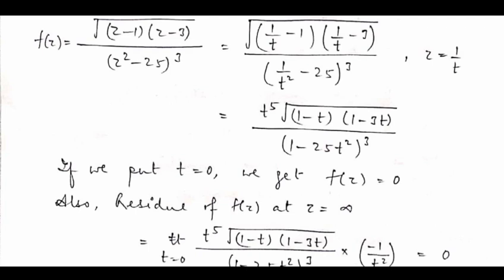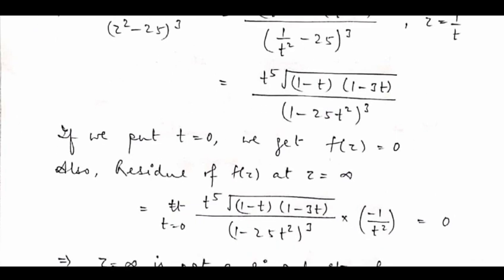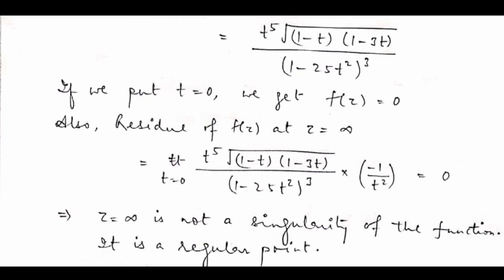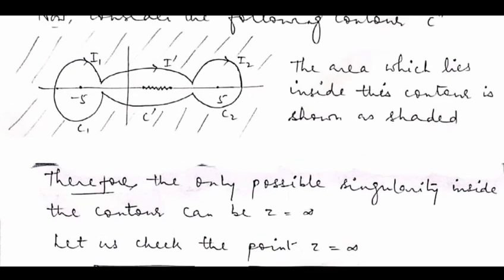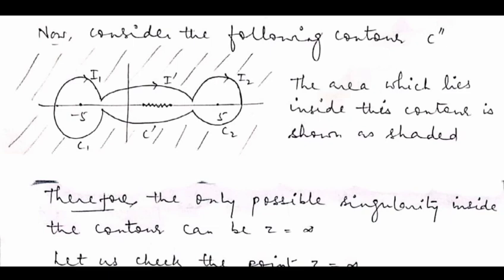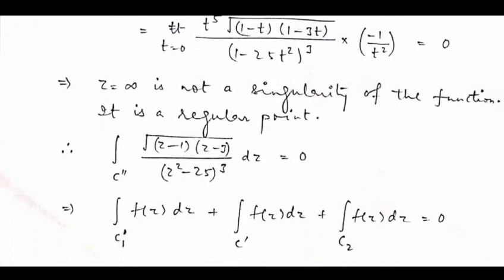Therefore the residue of f(z) at z equals infinity comes out to be 0, so it is a regular point. This means that for the contour C double dash, there are no poles inside, and Cauchy's integral theorem tells us the contour integral over C double dash equals zero. We write formally: the integral of root over (z minus 1)(z minus 3) divided by (z squared minus 25) to the power 3 dz over contour C double dash equals zero.